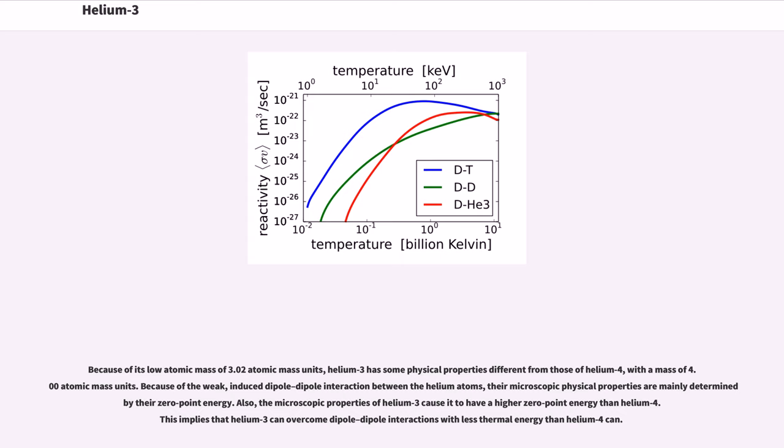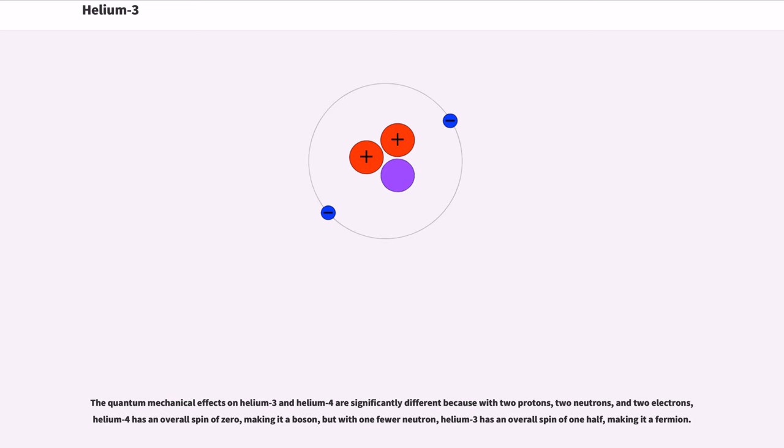This implies that helium-3 can overcome dipole-dipole interactions with less thermal energy than helium-4 can. The quantum mechanical effects on helium-3 and helium-4 are significantly different because with two protons, two neutrons, and two electrons, helium-4 has an overall spin of zero, making it a boson, but with one fewer neutron, helium-3 has an overall spin of one-half, making it a fermion.